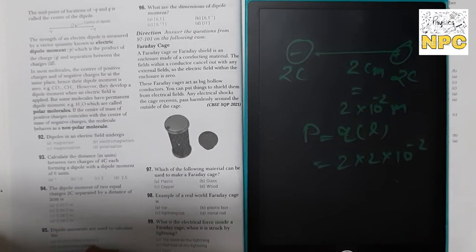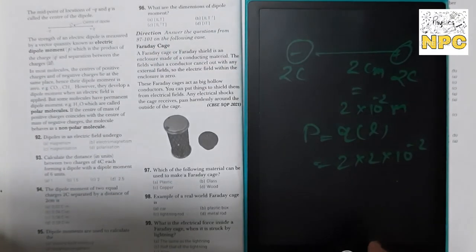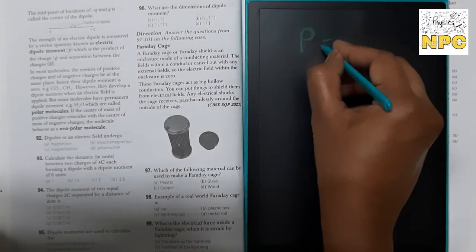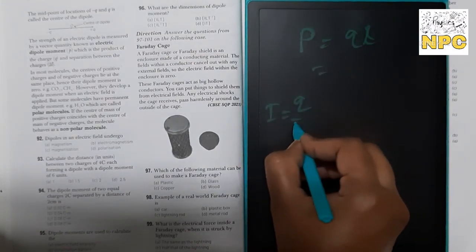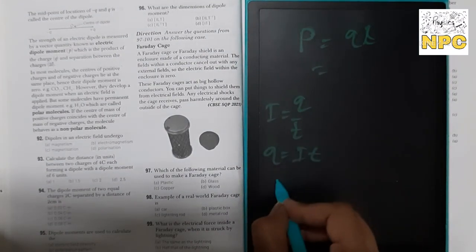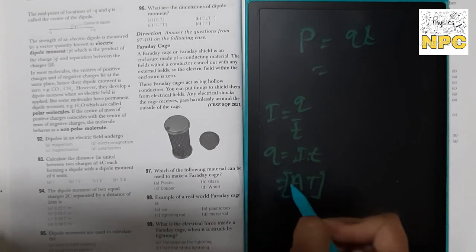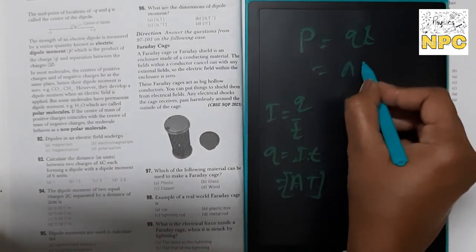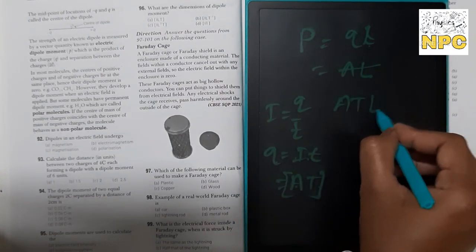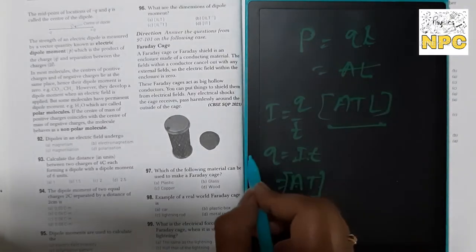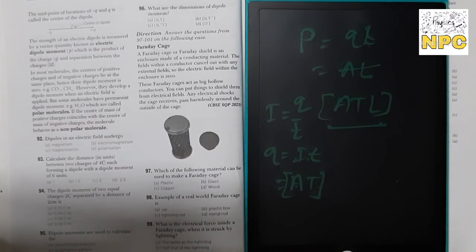Dipole moments are used to calculate the strength of the dipole. Next: what are the dimensions of dipole moment? P = Q × L. Since I = Q/T, we get Q = I×T (ampere × time). So the dimensional formula of dipole moment is A·T·L — option 1 is correct.